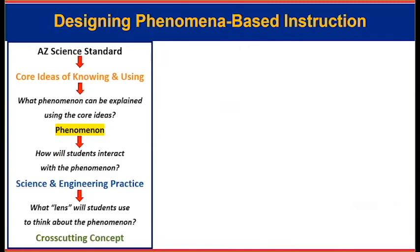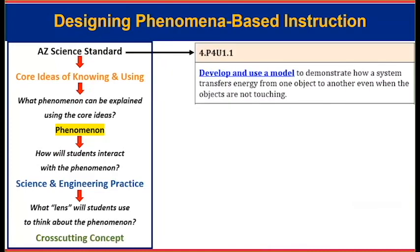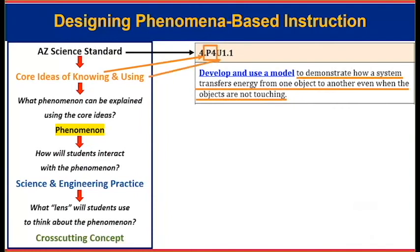I created this one-pager, borrowed from NSTA, on how to walk through the process of designing phenomena-based instruction. The first thing you do is start with your standard — I picked a fourth grade physical science standard: 'develop and use a model to demonstrate how a system transfers energy from one object to another even when they're not touching.' Then I dig into the core ideas of knowing and using: P4 demonstrates how a system goes into the content I need to know, and U1 clues me in that I need to engage my students with some phenomena and do some sense-making with them. Once I've read my standard and the background information, and I feel confident in the content, I can pick a phenomena.